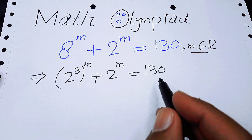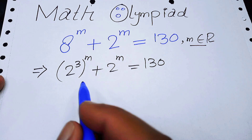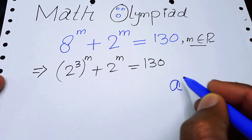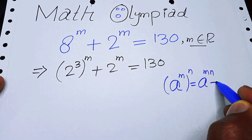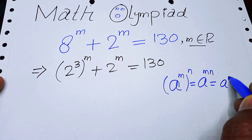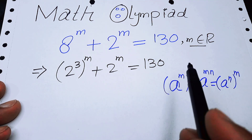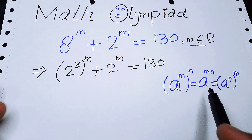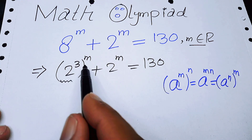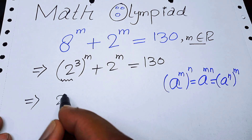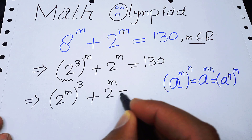Now we can use the exponent law: if we have a to the power of m, to the power of n, it becomes a to the power of m times n. This also equals a to the power of n to the power of m — we can interchange the exponents. Applying this law, the expression becomes 2 to the power of m, whole power 3, plus 2 to the power of m, equal to 130.